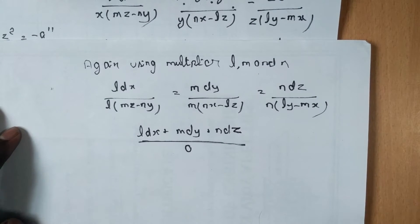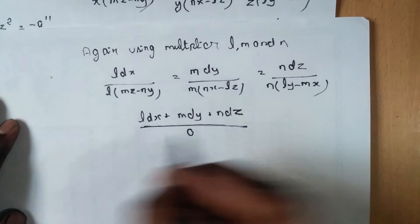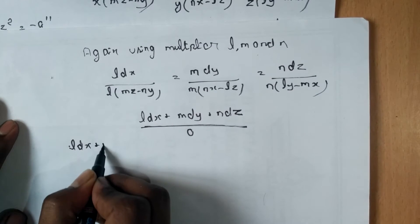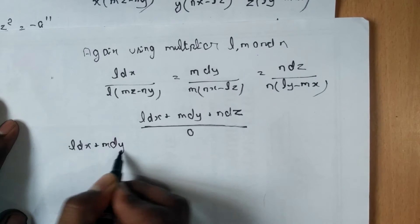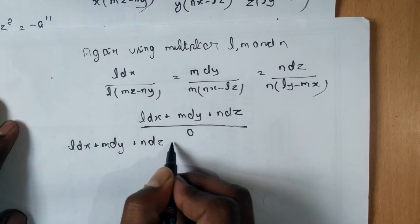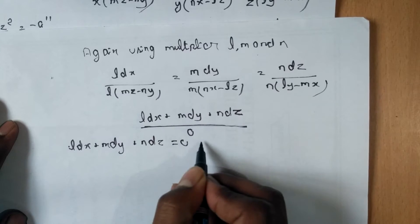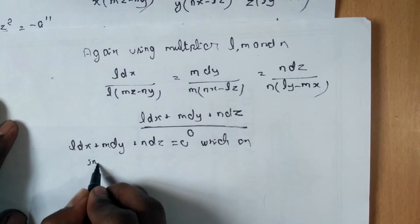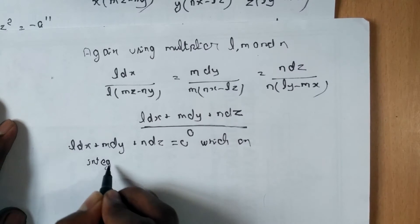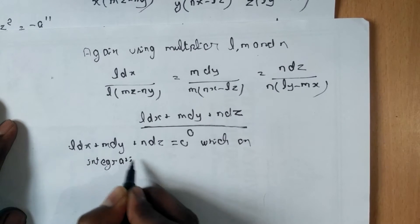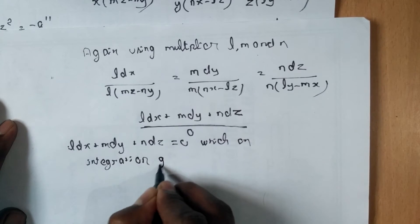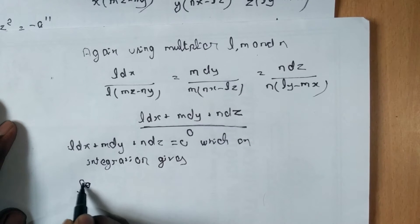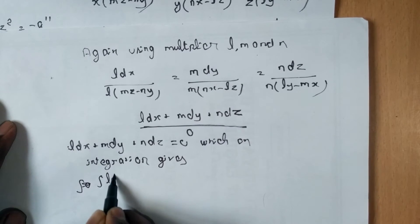Now on integrating this, l dx plus m dy plus n dz is equal to 0, which on integration gives: integration of l dx is lx...